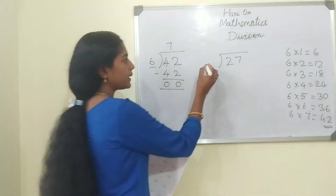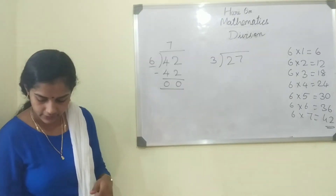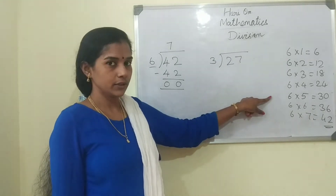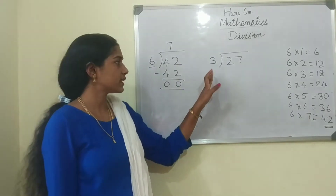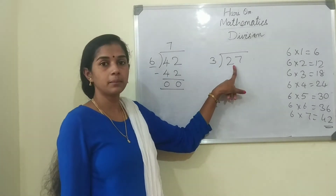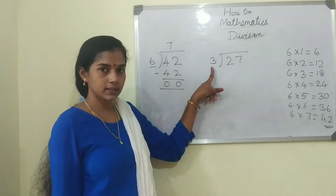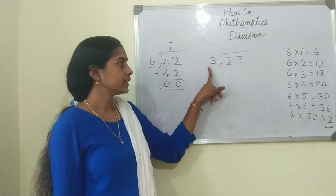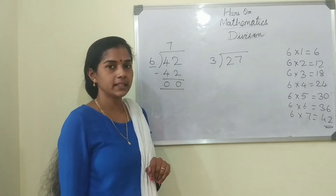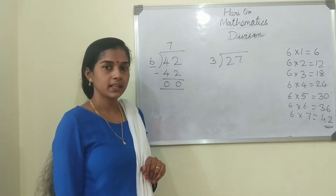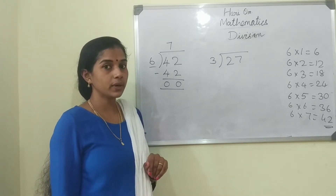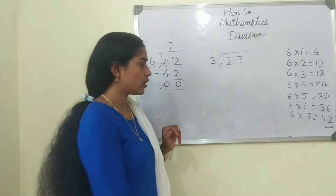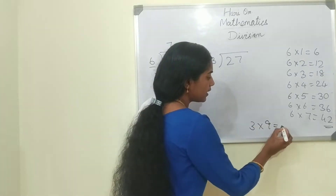Next: 27 divided by 3. Everyone knows the tables of 3. Let us start saying the tables of 3 and we should get the number 27: 3 ones are 3, 3 twos are 6, 3 threes are 9, 3 fours are 12, 3 fives are 15, 3 sixes are 18, 3 sevens are 21, 3 eights are 24, 3 nines are 27. So we got the number 27 — 3 nines are 27.